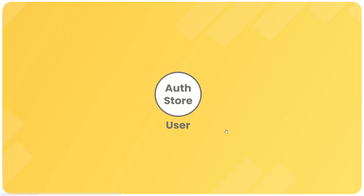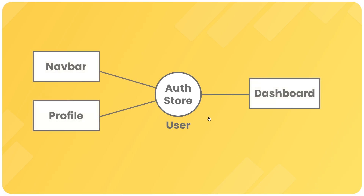For example, we might have a store for the global authentication status of the user using the website, and any component in the application would be able to access that user state from the auth store. That value would potentially switch between being a user object when the user is logged in and null when the user is logged out. So whenever that state change occurs in the authentication store, any component using that state will get the updated value right away.